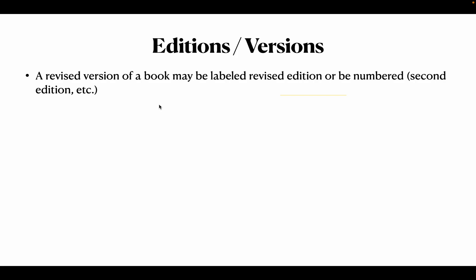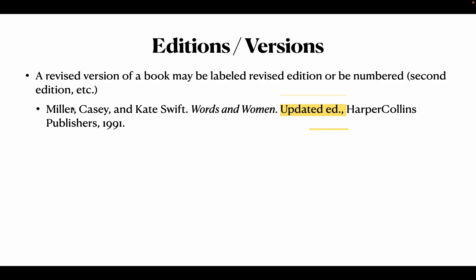Now we have to talk about editions or versions. A revised version of a book may be labeled 'revised edition' or numbered second edition, third edition, etc. For example: Miller, Cassie and Kate Swift — two authors, first author's surname comes first — 'Words and Women,' updated ed., HarperCollins Publishers. Remember, after author and main source, everything else is separated by commas.